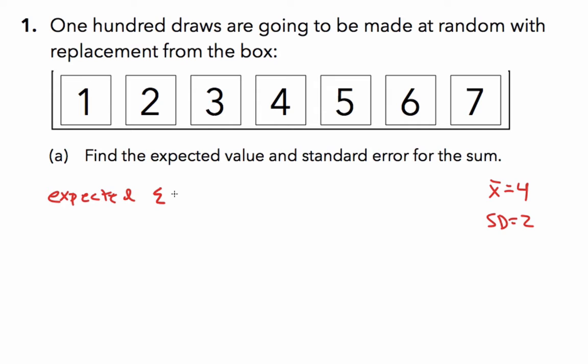So to answer part A, our expected value or sum will be the number of draws, 100, times the average value of each draw, 4. The product will be 400. To get the standard error, we take the square root of the number of draws and multiply it by the standard deviation. So, the square root of 100 times 2. The square root of 100 is 10, and the product of 10 and 2 is 20.